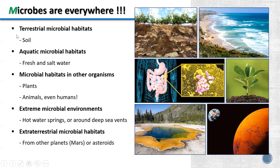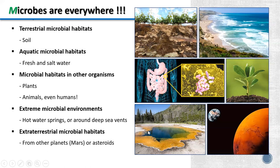They can also be found in the Great Salt Lake, the Dead Sea, and even below the ice of Antarctica. Most microorganisms can be found in terrestrial habitats like soil, or aquatic microbial habitats like freshwater or saltwater in the ocean or sea. Even some microbes can be seen in other organisms like in plants — you can see spots on the leaves — or even in our bodies, animals, or humans like us.